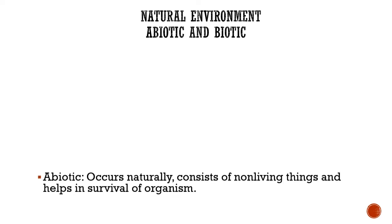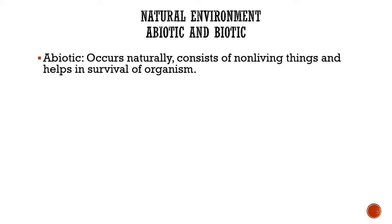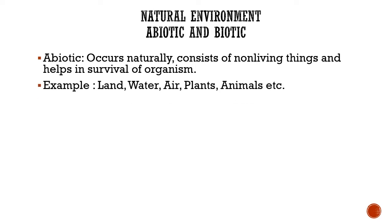Now we will learn in detail about natural environment. Natural environment consists of abiotic and biotic components. Abiotic components are the surroundings of any organism which occur naturally, consisting of non-living things, and help in the survival of organisms. For example, land, water, and air. Land provides a place to live and to grow plants. Water is used for the growth of plants and for drinking by animals. Air contains gases which are used for breathing. Plants and animals provide varieties of items and are dependent on each other.